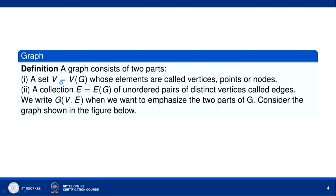Let us first define what we mean by a graph. A graph G consists of two parts: a set V equal to V(G) whose elements are called vertices, points, or nodes, and a collection E equal to E(G) of unordered pairs of vertices called edges. We write G(V,E) when we want to emphasize the two parts of G.